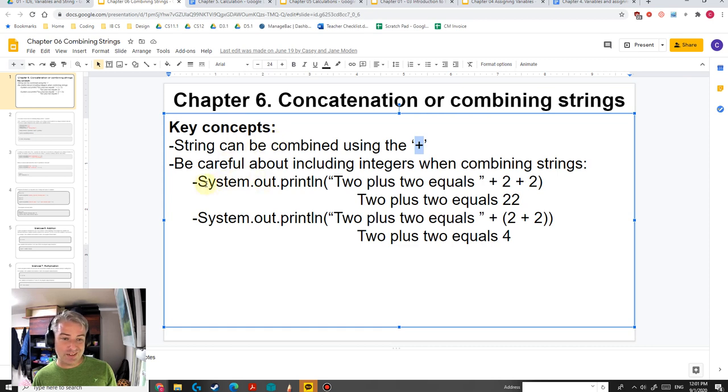Down here it's kind of interesting - combining integers. If we put parentheses around the integers, it's going to do the math for us and then add it to the string. But if we don't, it'll just include this '2 plus 2 equals' and literally just add a number 2 onto the string and then add another number 2 onto the end of the string, so we get this thing here.